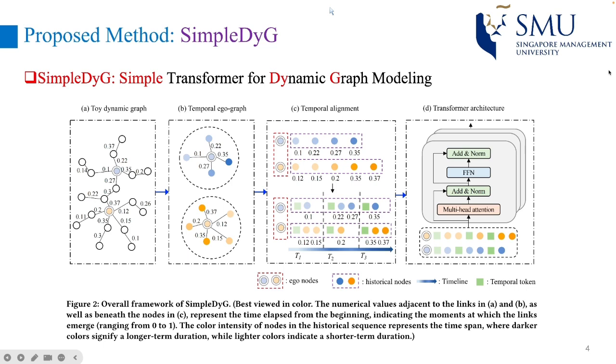Our framework is applied to a dynamic graph G, where multiple temporal links emerge at various time points. In order to capture the dynamic evolution, we begin by extracting a temporal ego graph for each ego node, which contains the entire historical interactions as shown in figure B.